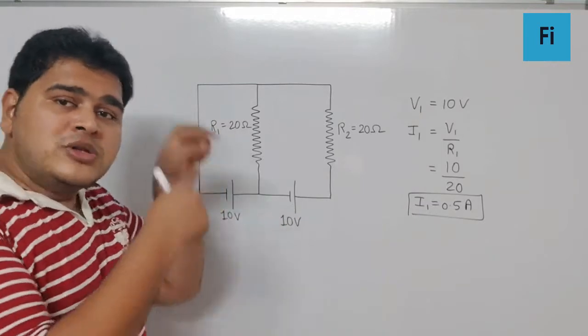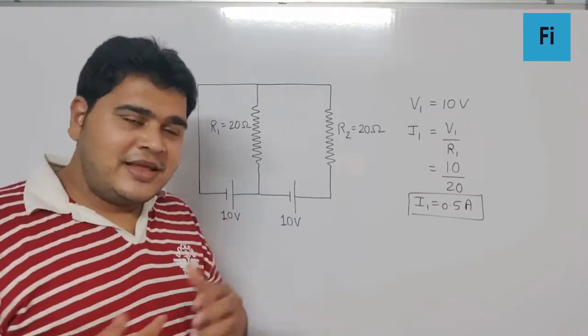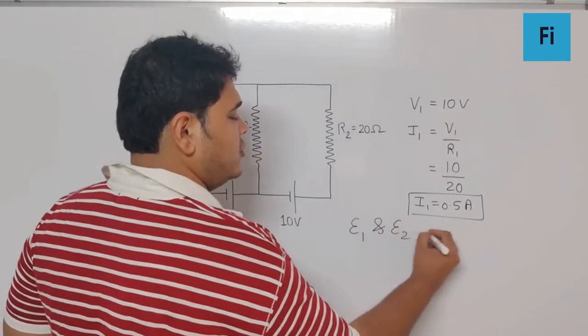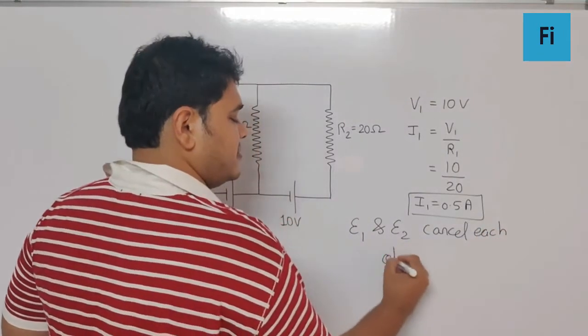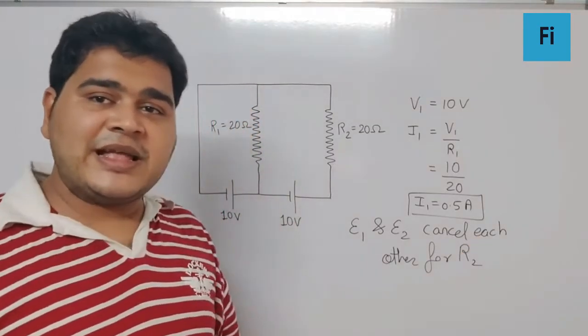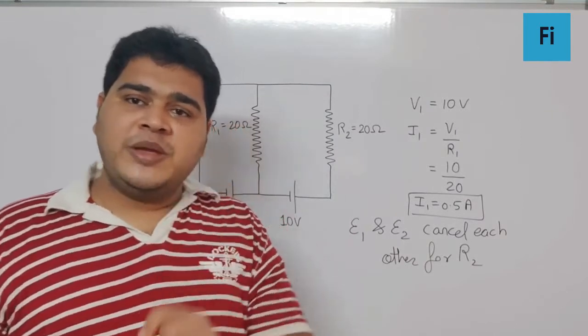Yes guys, the E1 and E2 cancel each other for R2. So basically I can say there is no potential difference existing for R2, which means the current flowing through resistance R2 is going to be 0.